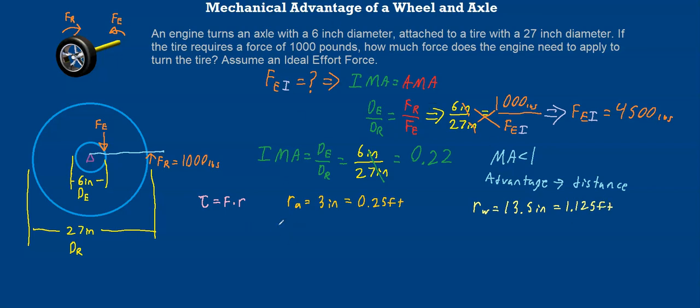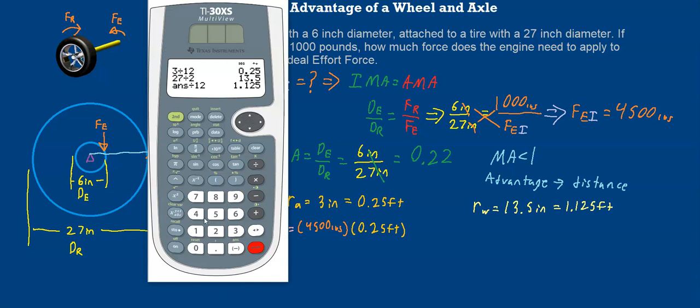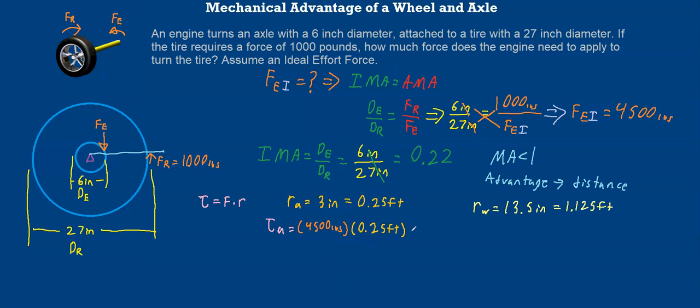If we want to know the torque at our axle, the torque at our axle is equal to our force at our axle multiplied by the radius at our axle. We know the force at our axle was 4,500 pounds. So we say 4,500 pounds is our force, and we multiply that by the distance, which was 0.25 feet. It's important to have our radius in feet, because torque is measured in foot pounds. If we pull out our calculator, 4,500 multiplied by 0.25 gives us 1,125 foot pounds.